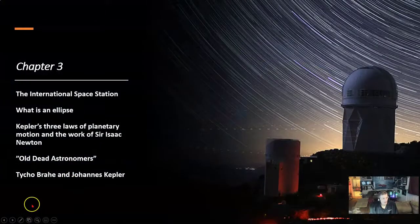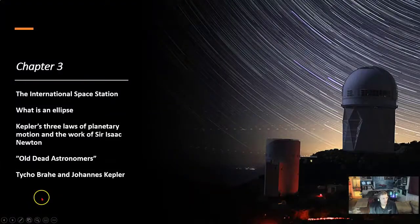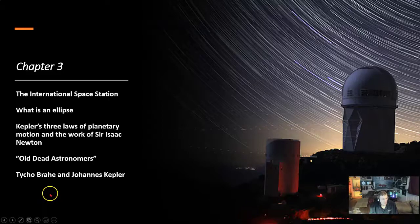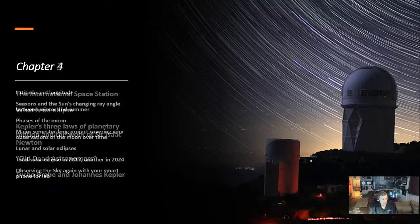In Chapter 3, we look at the International Space Station, what an ellipse is, Kepler's three laws of planetary motion, and the work of Sir Isaac Newton — our old dead astronomers Tycho Brahe and Johannes Kepler.